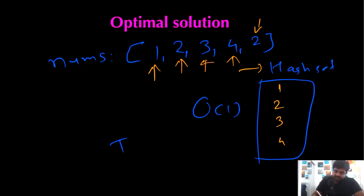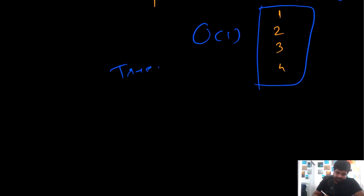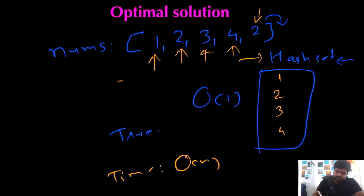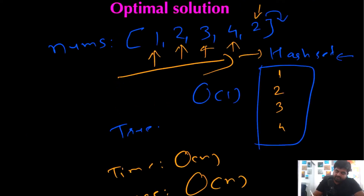So in this case we can return true immediately when the array contains a duplicate value. And if we reach the end of the array without finding any duplicate entries in the hash set, we return false. The time complexity is O(n) because we iterate the input once. The space complexity is also O(n) because we create an additional hash set where we store all the elements present in the given input.